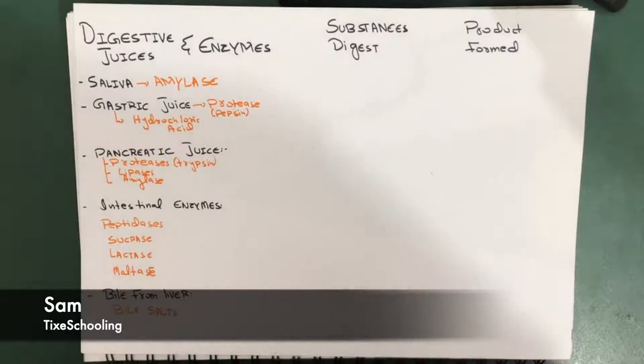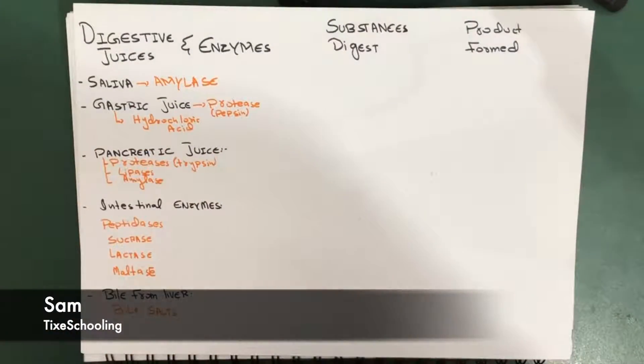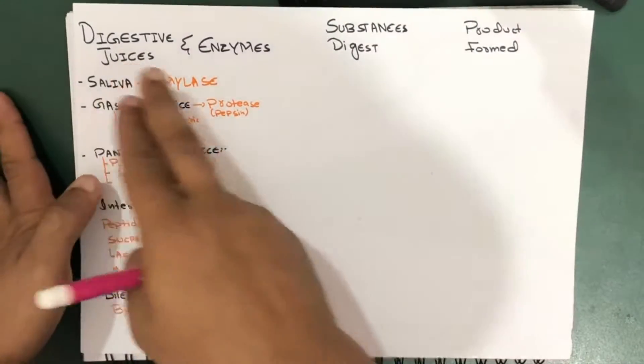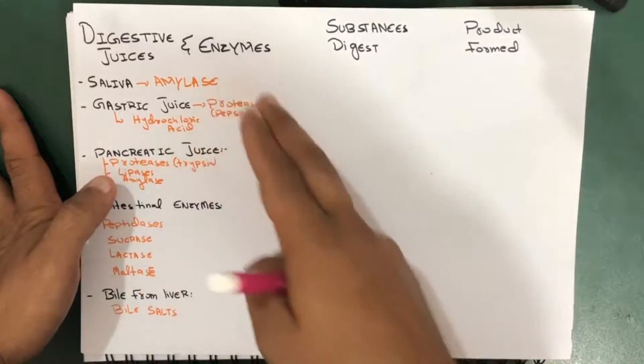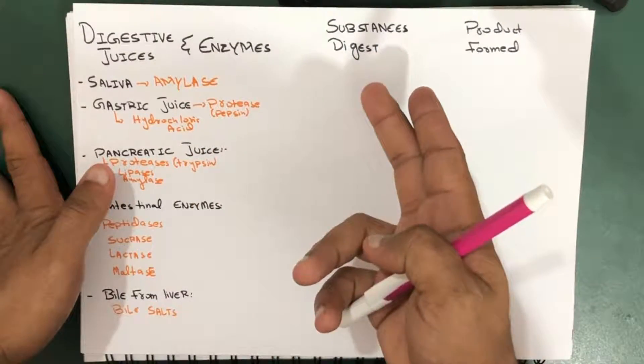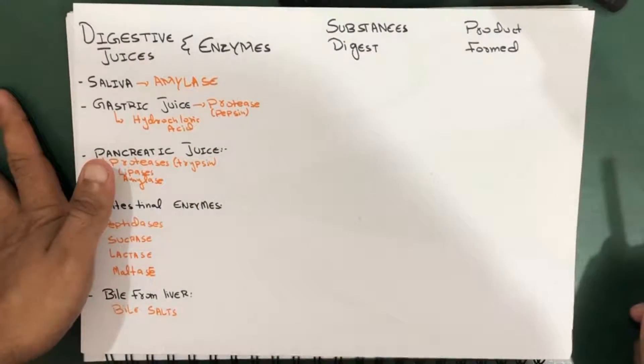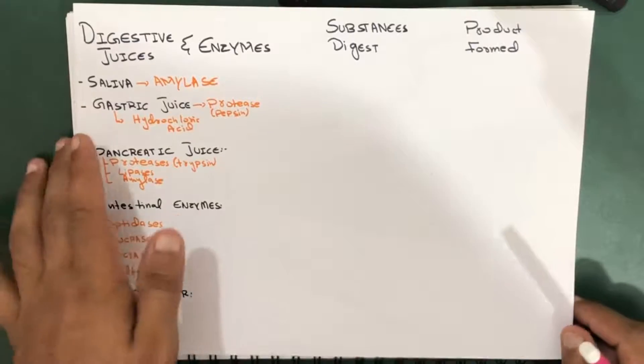Hello YouTube, this is Sam from Tiger Schooling. In this session we're going to talk about digestive juices and enzymes, the substances digested, and the products which are formed.